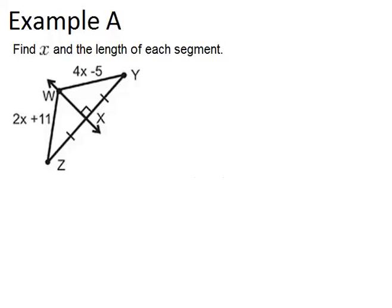In example A, it says find x and the length of each segment. In this picture, the line WX is a perpendicular bisector of the segment ZY, and you can tell that for two reasons.